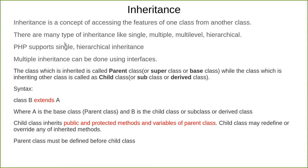There are many types of inheritance: single inheritance, multiple, multilevel, and hierarchical. PHP supports single and hierarchical inheritance. Multiple inheritance is not supported but it can be done using interfaces, just like Java. The class which is inherited is called the parent class, also known as super class or base class, while the class which is inheriting is called the child class, subclass, or derived class.